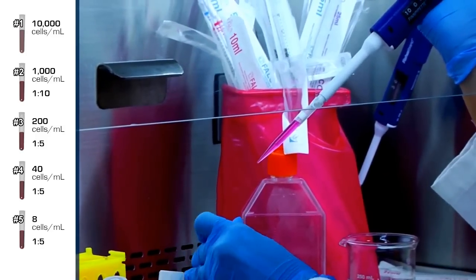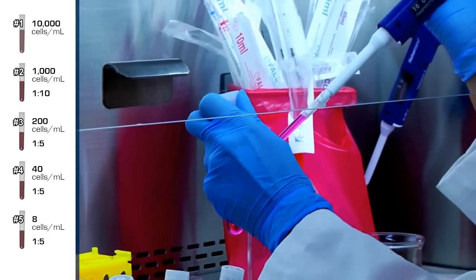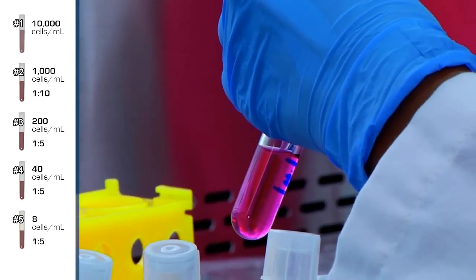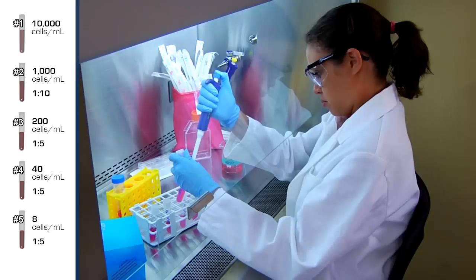Lastly, transfer 1 milliliter from tube number 4 to tube number 5 for a 1 to 5 dilution with a concentration of 8 cells per milliliter.